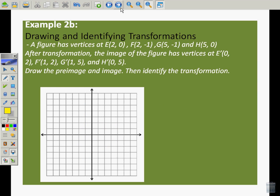Here's one for you to do. You can try this one. I'm not going to pause, I'm going to keep going through, but if you want to pause you can certainly do that. Once again, I'm going to outline my preimage in one color. E is at 2, 0. F is at 2, negative 1. G is at 5, negative 1, and H is at 5, 0. So I've got myself a rectangle here.